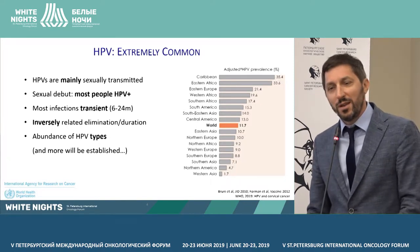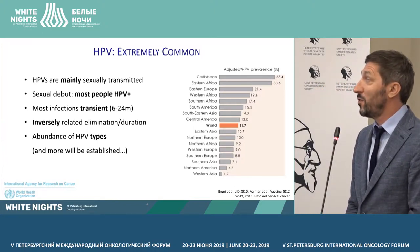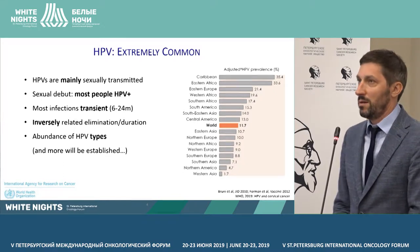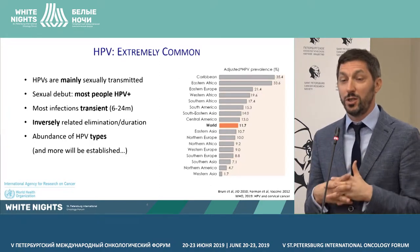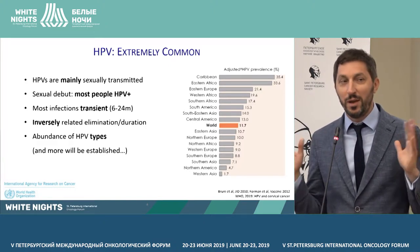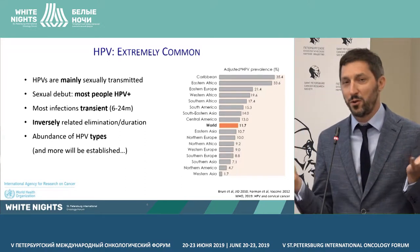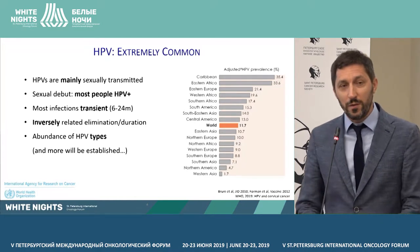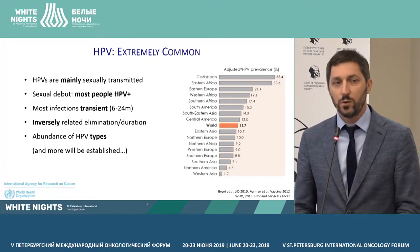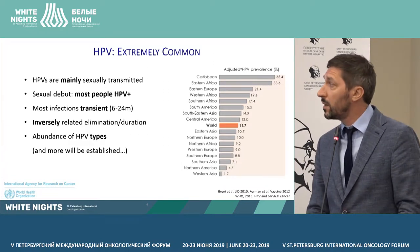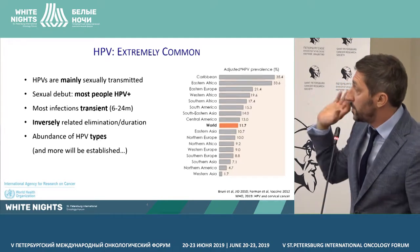Another very important factor is that HPV is practically everywhere and is mostly transmitted sexually. Most people are HPV-infected after the start of sexual life. Most of these infections are transient — within six to 24 months they disappear. This virus infection disappears in the majority of infected people, and there is a feedback between the elimination of the virus infection and its duration.